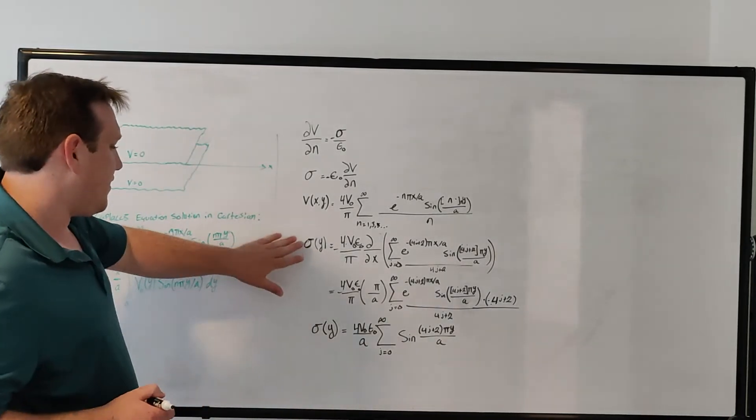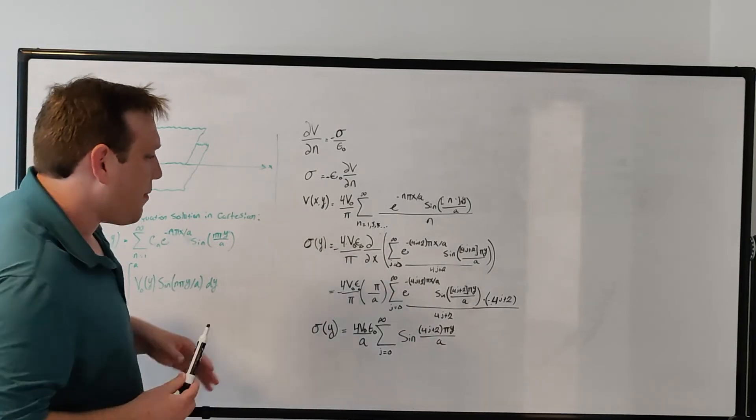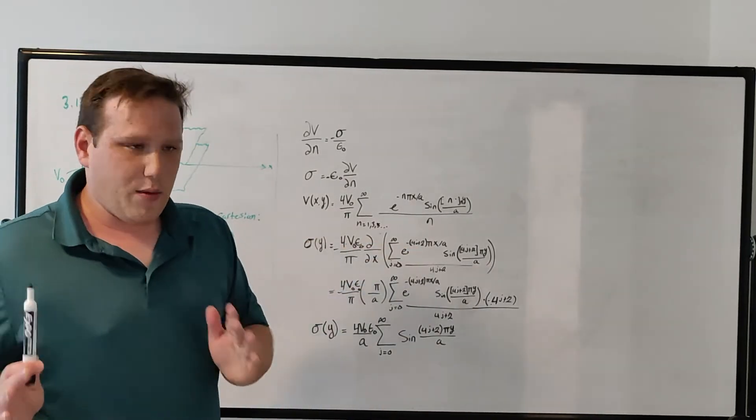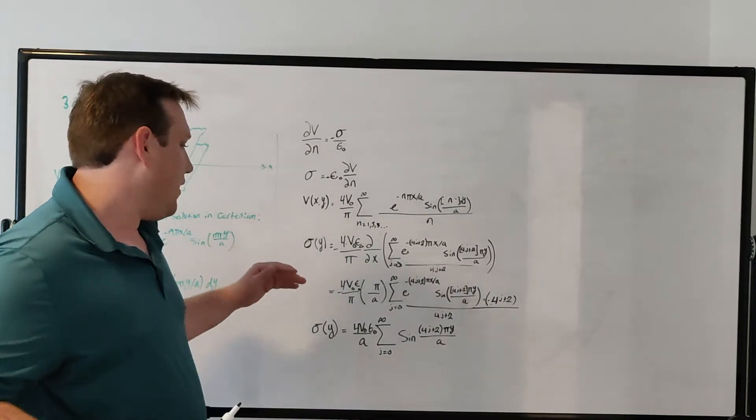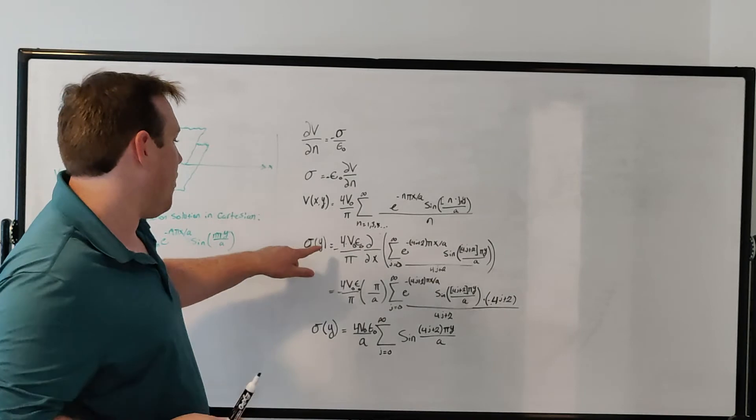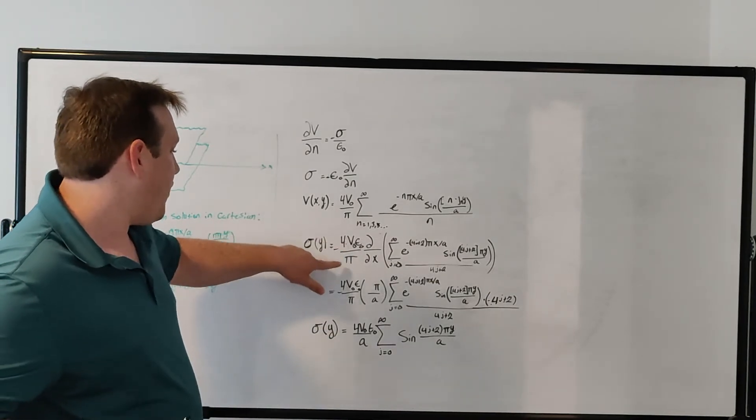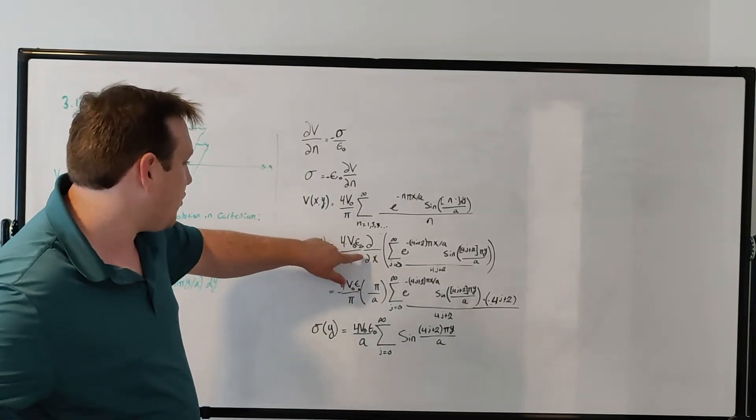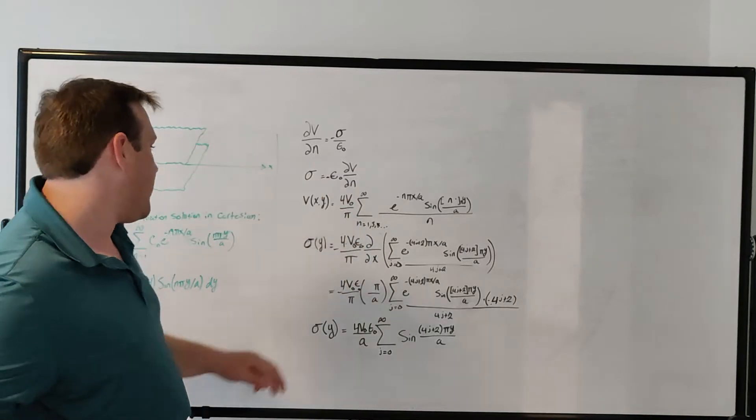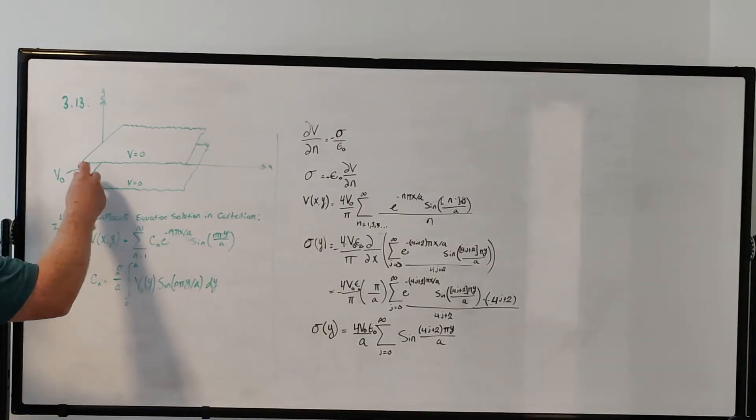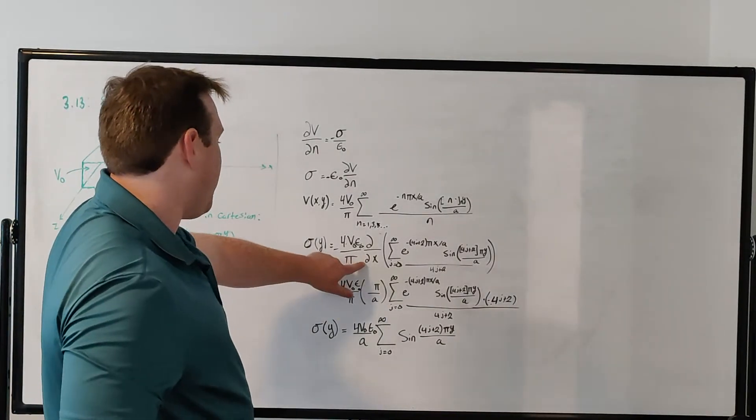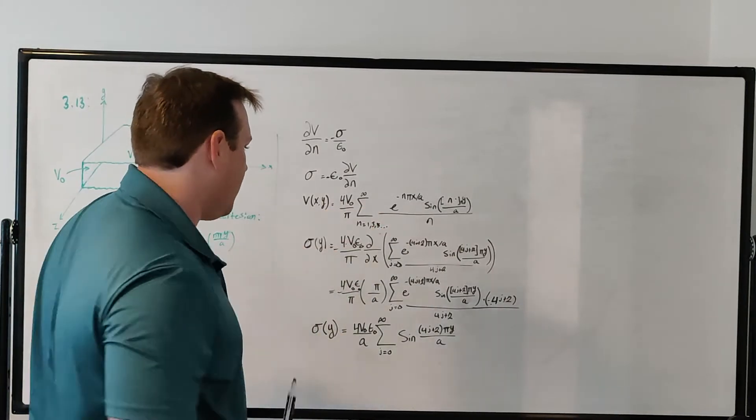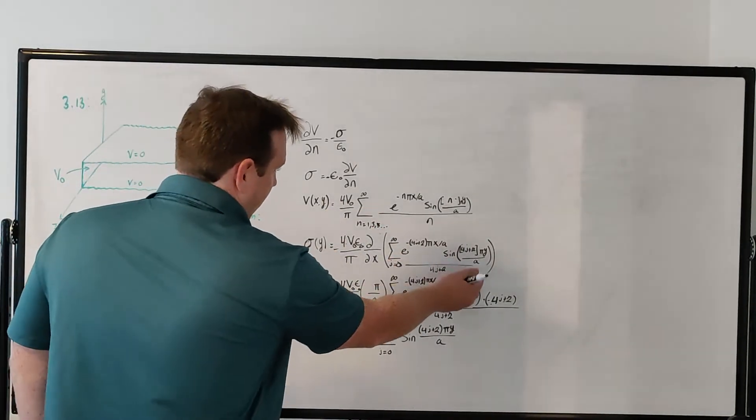So that tells us that the charge density, anywhere you see 4j plus 2, I will say n, is minus 4 V naught over pi, and it's the partial derivative with respect to the normal direction. In this case, the normal direction to the surface is the x direction. So we're taking the derivative with respect to x of this summation.